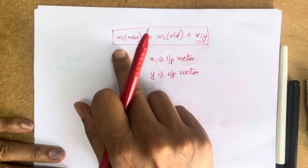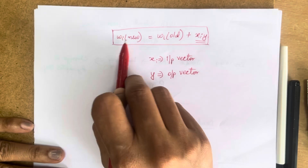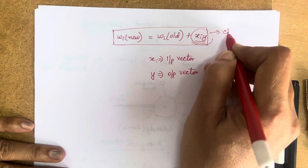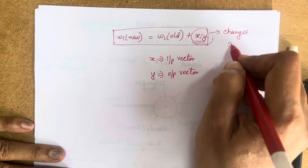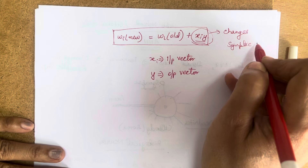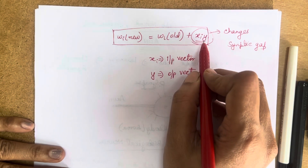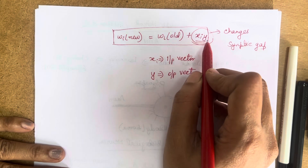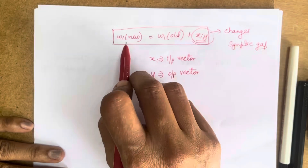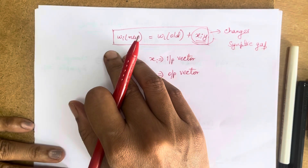Hebb framed one simple formula: new weights = old weights + change in weights (representing the synaptic gap change). This is nothing but w_new = w_old + xi × y, where x represents the input vector and y represents the output vector. By having changes in the synaptic gaps, the new weights also get changed.